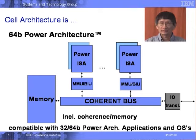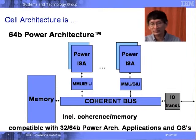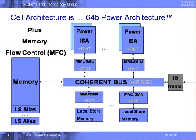Architecture-wise, the Cell BE is based on the 64-bit Power PC. This is the layout of the 64-bit Power PC — we have the Power Instruction Set Architecture with the Memory Map unit and the Burst Interface unit talking to memory and the I/O system through the coherent burst. From this architecture, we add what we call the memory flow controller, adding a local memory store and local store memories.